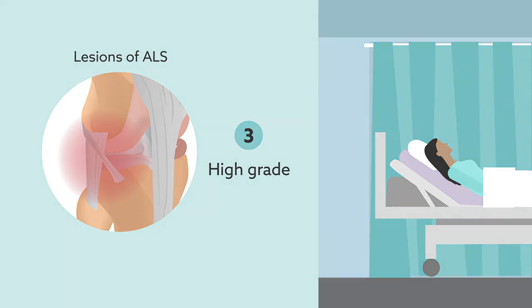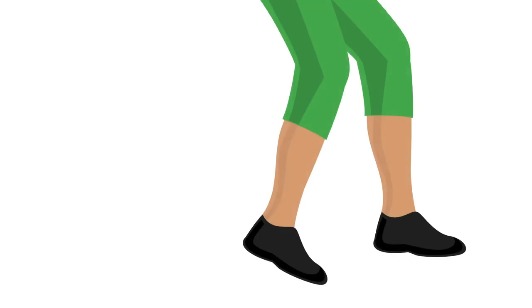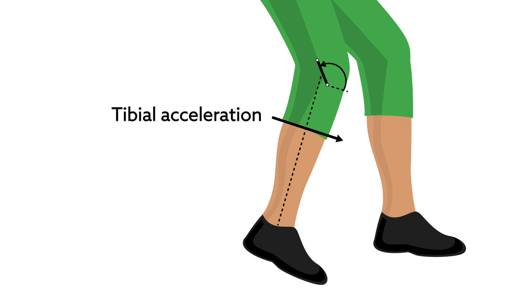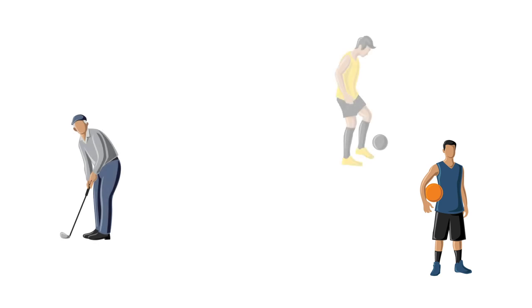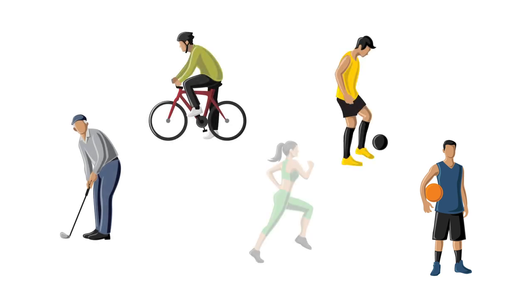More work is needed to clarify the connection between ALS injury and pivot shift. Future studies could, for example, use a more quantitative measure of the extent of pivot shift such as tibial acceleration, and explore a larger sample of patient knees to better understand the range of factors that lead to re-injury among patients undergoing ACL reconstruction surgery.